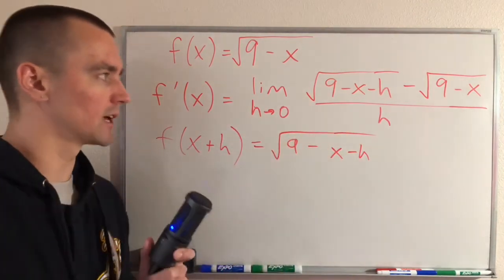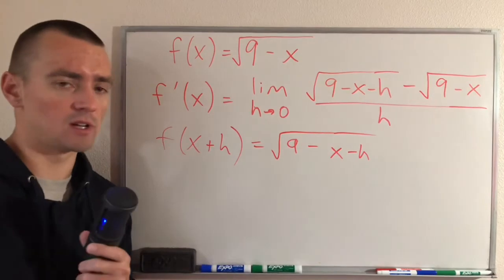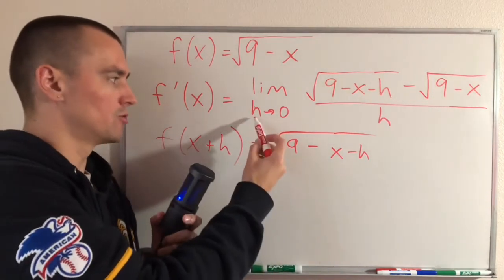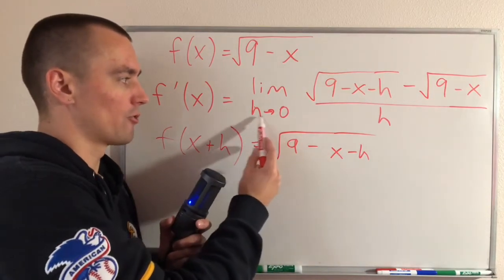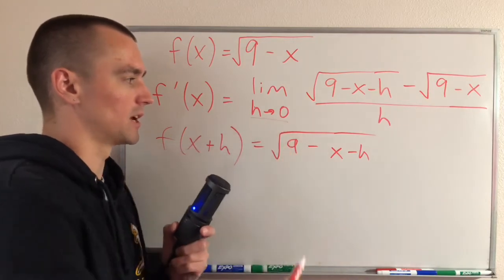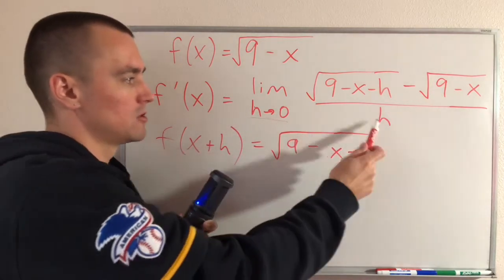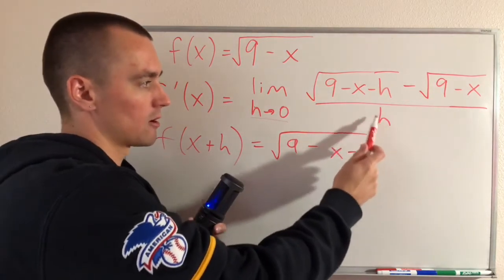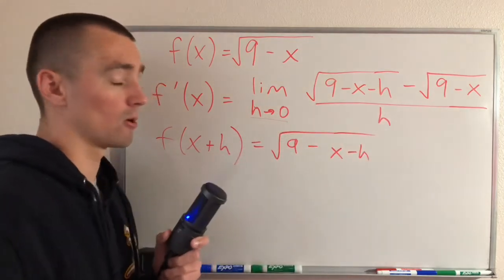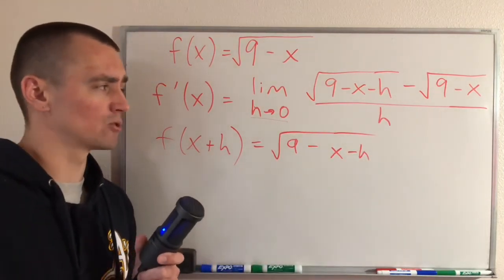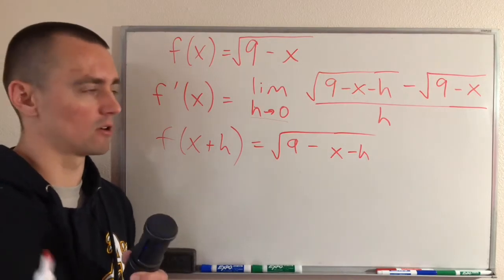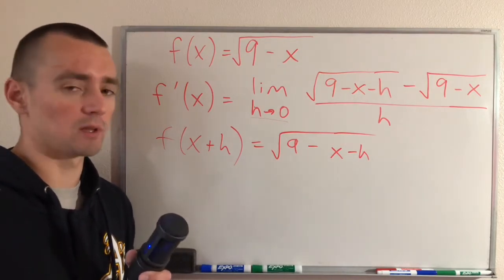But usually when you look at a limit like this and you're trying to evaluate it, the easiest place to start would usually be to just try plugging in 0 for h since it says we're taking the limit as h goes to 0. But if we do that here, we're going to put a 0 on our denominator and we're going to divide by 0, which is never okay to do. So as a result, we have to try and figure out some other way that we can manipulate this limit.